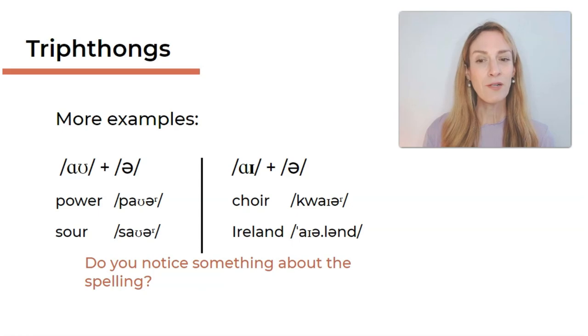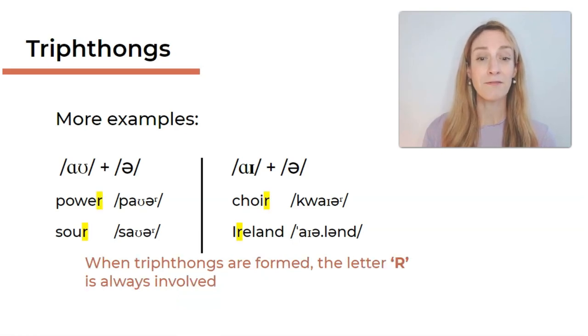Now have a look at the words again and specifically the spelling of these words. Do you notice something about the spelling of these triphthongs? What letters do we use? Now if you have a careful look, you will realize that in all of these words we have the letter R. And when triphthongs are formed, the letter R is always present. It's always involved also in other examples. You can have a look at the two examples I showed you first. There was also the letter R in the spelling.